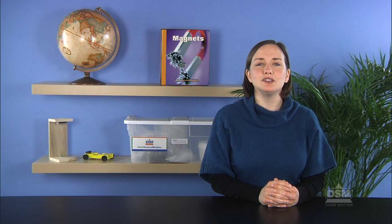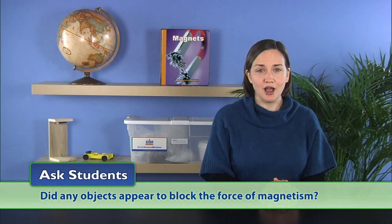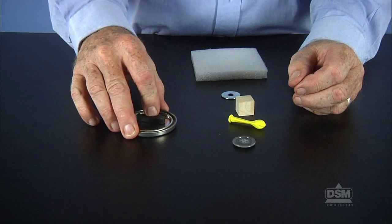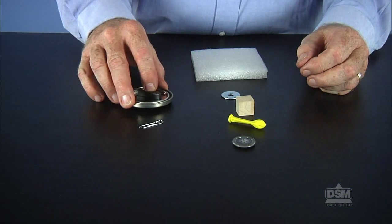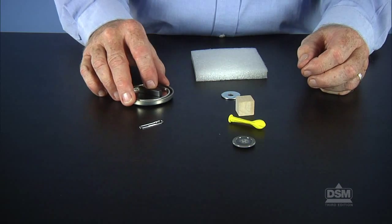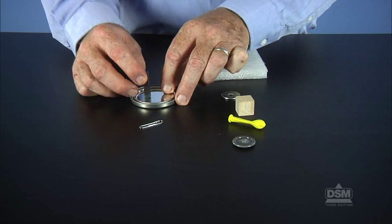Then ask students, did any objects appear to block the force of magnetism? Students should understand that when a magnetic object was placed between the magnet and the paper clip, the force of the magnet was pulled, distorted, or redirected by the magnetic object, resulting in little force passing through it.